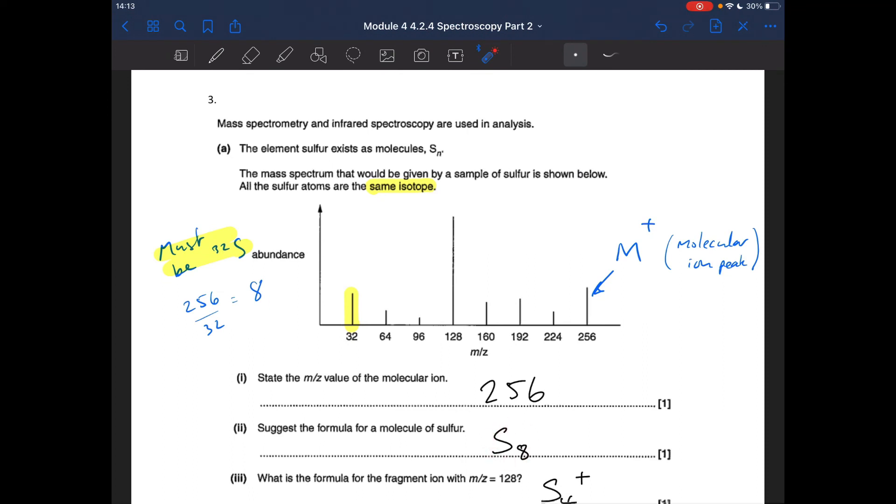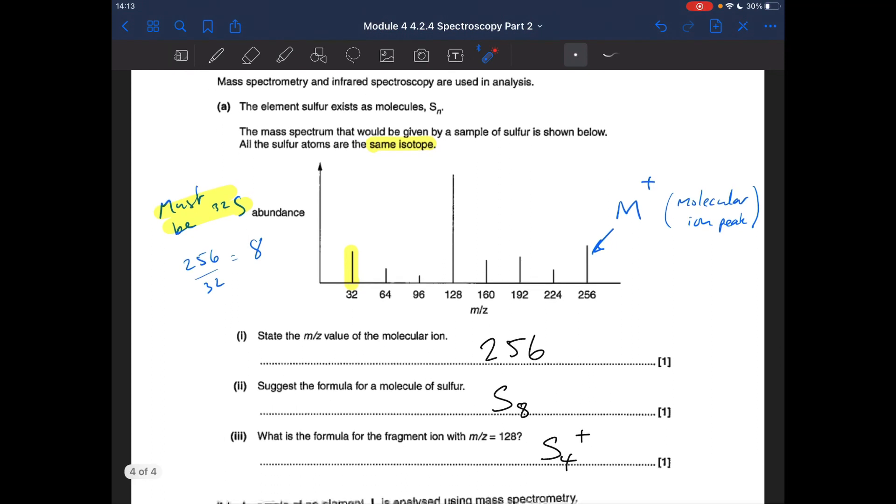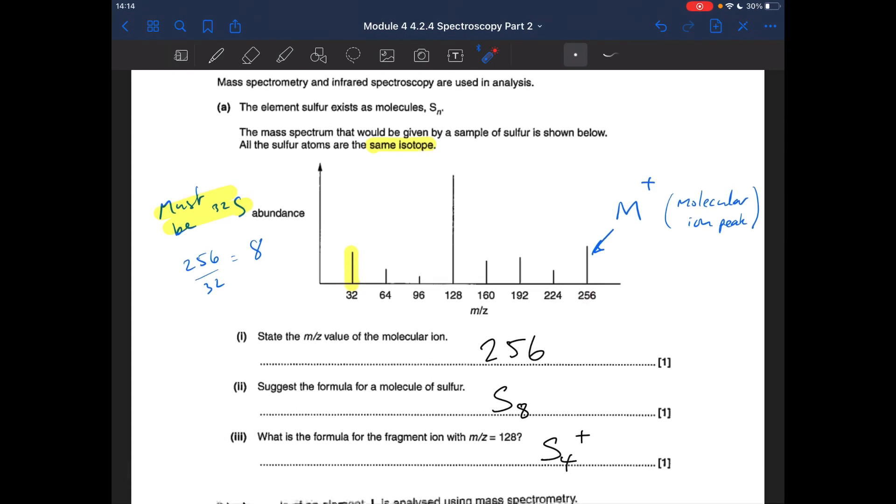The formula of the fragment ion peak with M/Z 128, well, that's obviously half of 256, so that's S4+, don't forget the charge. So that's that bit of the question.